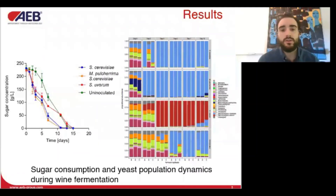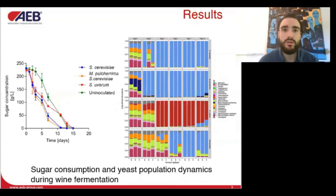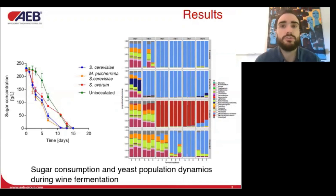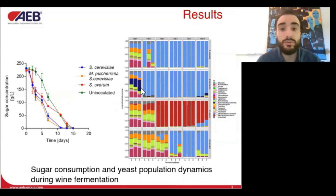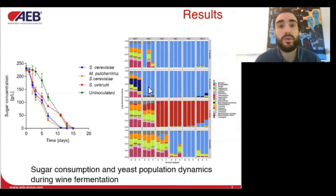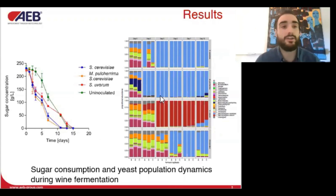These results show the sugar consumption and the yeast population dynamics during wine fermentation. Fermentations inoculated with Saccharomyces cerevisiae and Metschnikowia pulcherrima showed similar sugar consumption kinetics and were completed in 11 days. Interestingly, already at day two, Saccharomyces cerevisiae, represented in light blue, was able to dominate the yeast population. Saccharomyces uvarum uninoculated fermentations instead were finished in 15 days, with Saccharomyces cerevisiae present only at the end or starting from mid-fermentation, respectively.